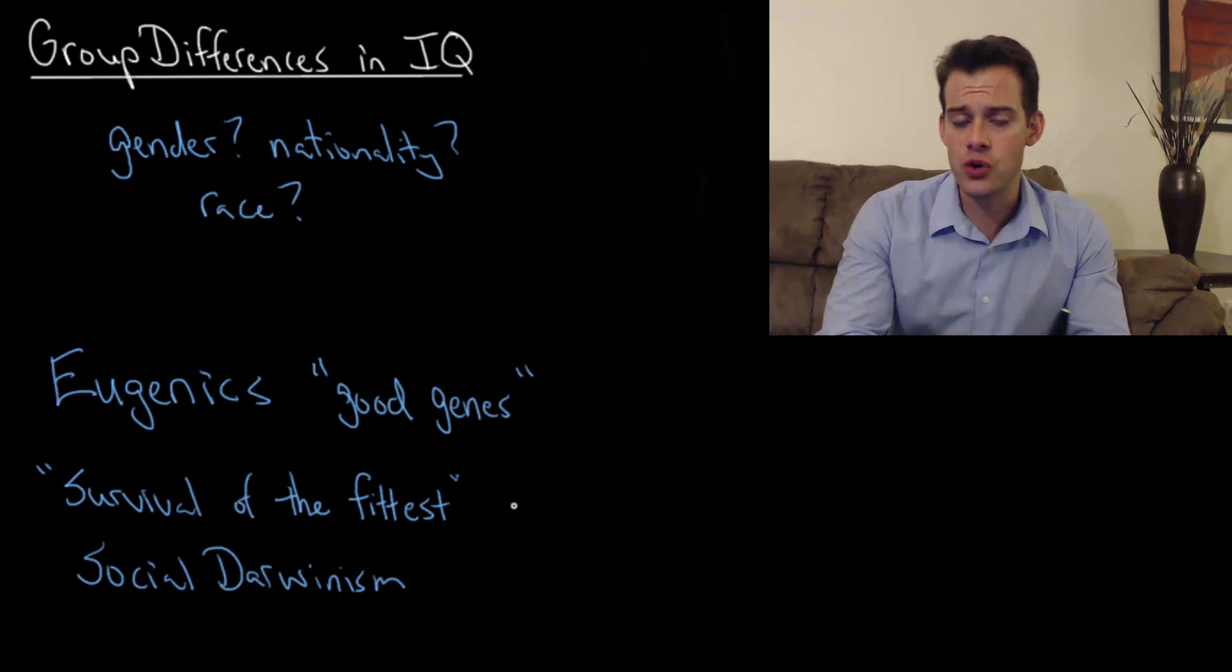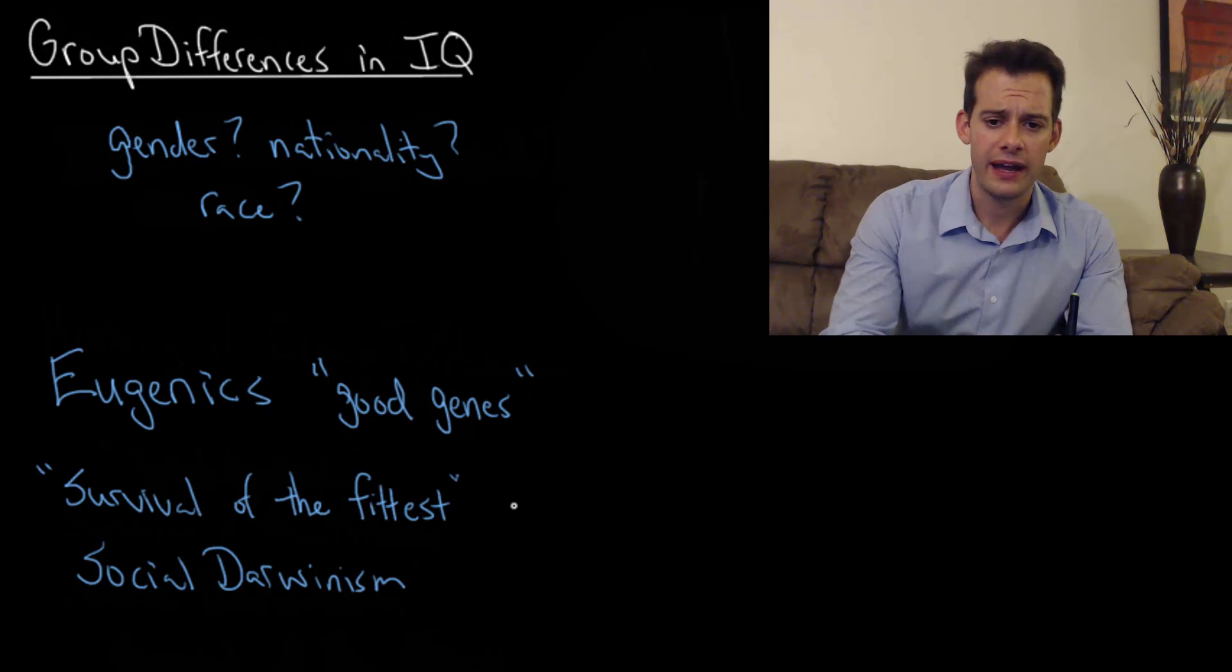I want to point out two important things here. The first is that the phrase survival of the fittest, which was not coined by Darwin, is meant to suggest that the organisms which survive are those which have the best fit with the environment. Not that they're the most fit, not that they're superior in some way, but that they fit with the environment best and that allows them to survive. So it's not suggesting that some version of a trait is inherently superior, rather that it fits with the environment best at that time. Should the environment change, then that trait is no longer going to be the best fit and some other version of the trait is going to be superior at that time.